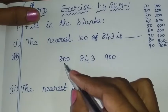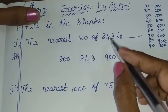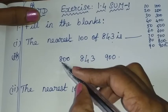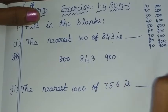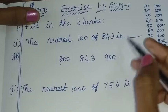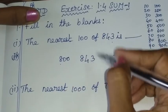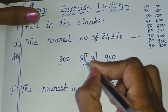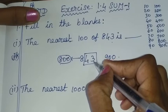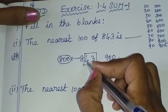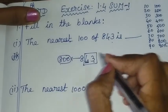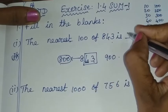Now let's see where we round off. Half of 100 is 50. The rule is: if the number is 50 or above, we round up; if it's below 50, we round down. For 843, we look at 43 — 43 is less than 50, so we round down. We put 800 in a box as the base. Since 43 is less than 50, the answer rounds to 800.